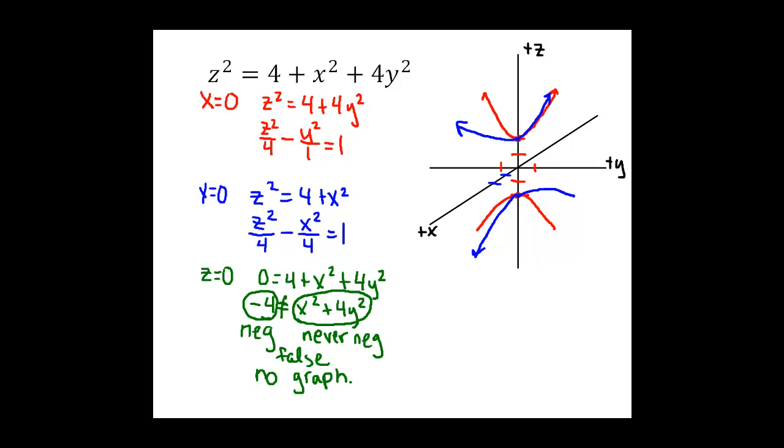Okay, so sometimes we can use what we already have to get enough of the graph. Or this is a case where we might want to plug in some other values of z to get some other cross sections. And if I had happened to do this first, I would still wait until I had done my other traces before I choose what to plug in for my other values of z.